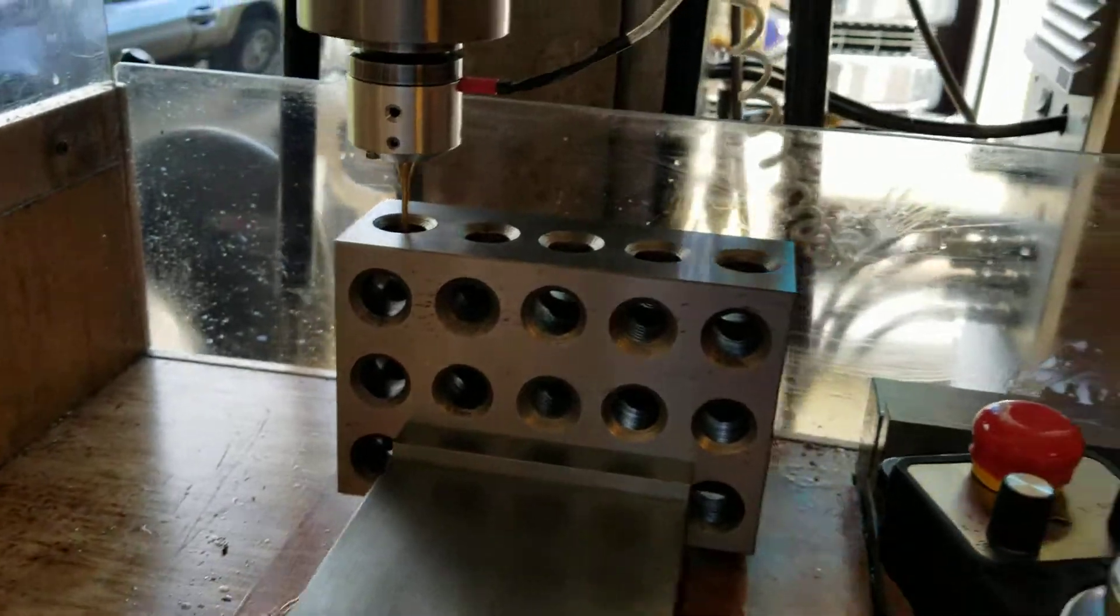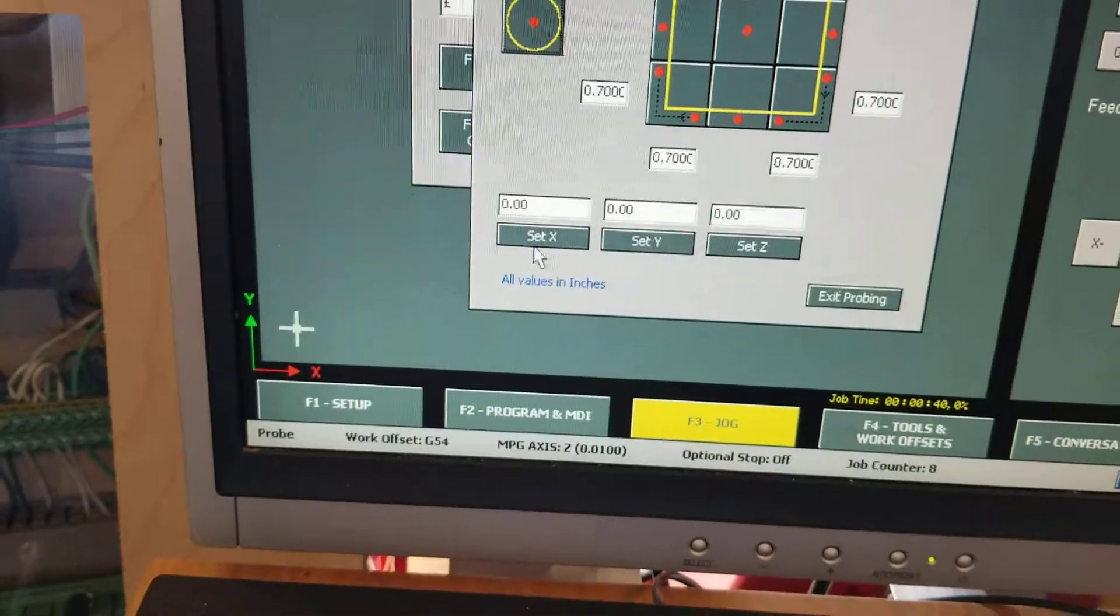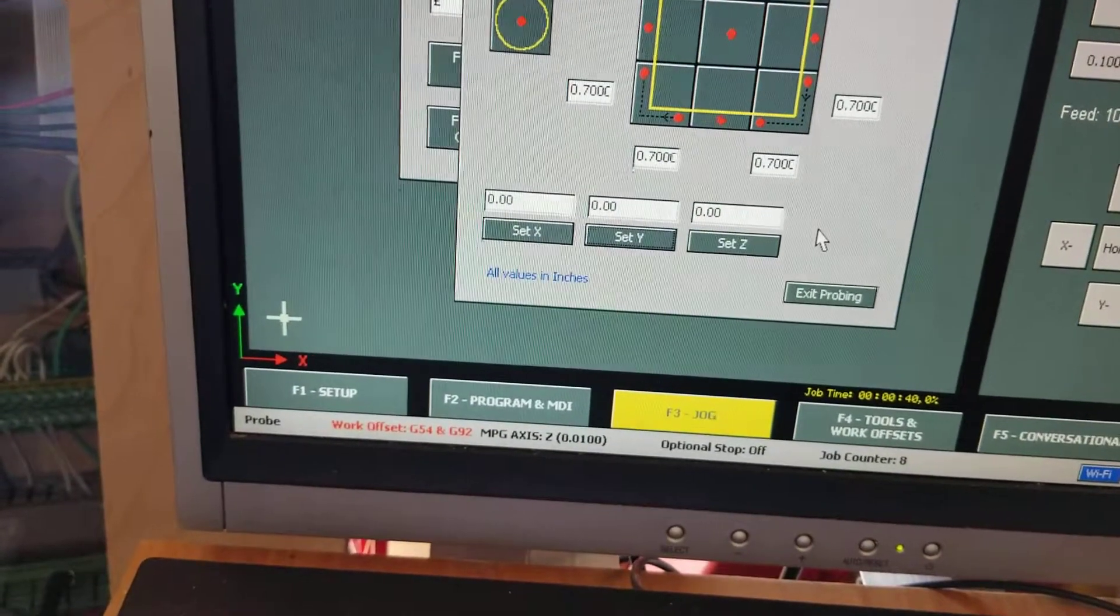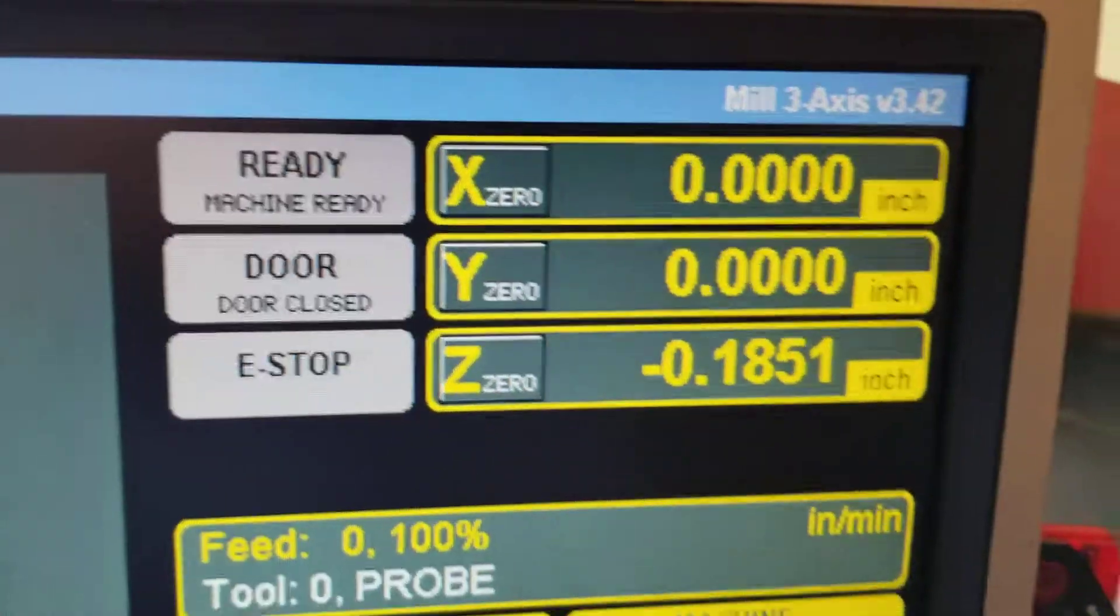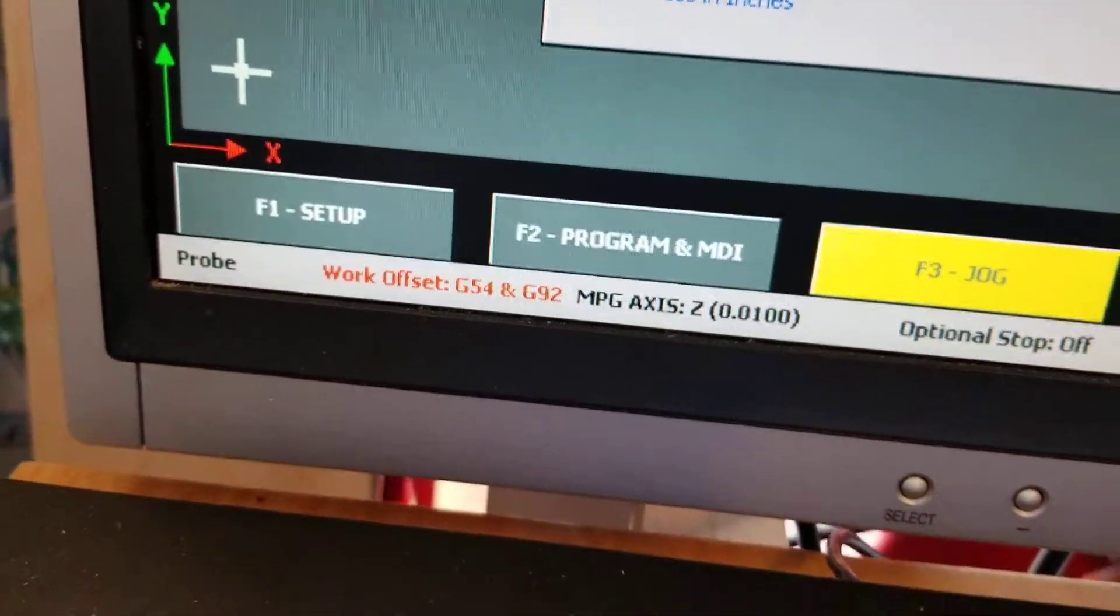So at that point you can go ahead and save your X and Y because essentially it's found the X and Y position. And it's now set the DROs at zero and entered G92 mode for your work offset.